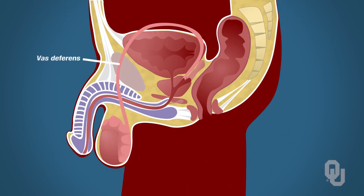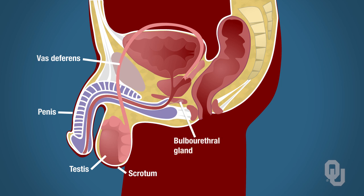These include the vas deferens, also called the ductus deferens, the penis, the testes, the scrotum, the bulbal urethral gland, the prostate gland, and finally the seminal vesicle.